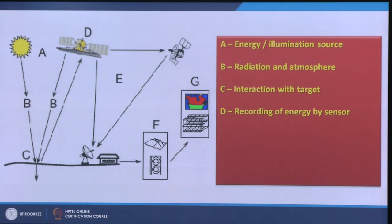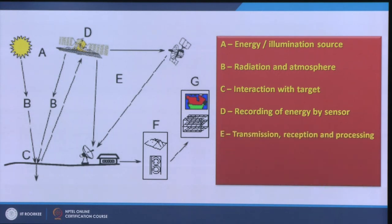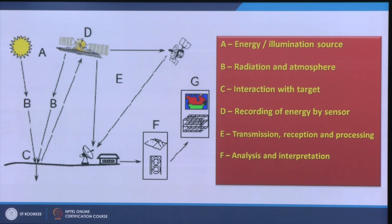D is the satellite system which records the energy returned by the earth's surface and objects, and then finally transmission, reception, analysis, interpretation, and finally the applications.